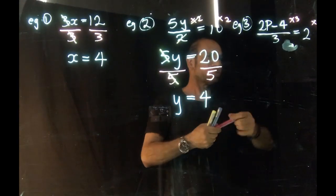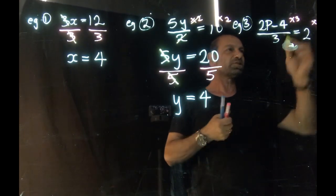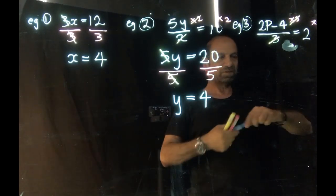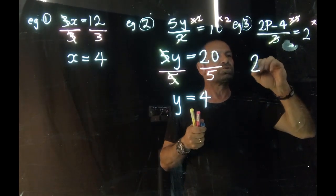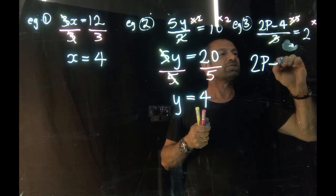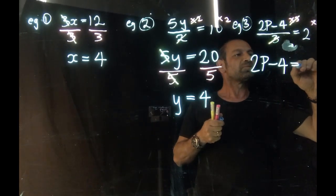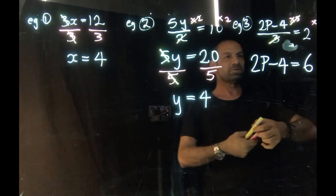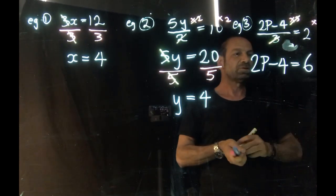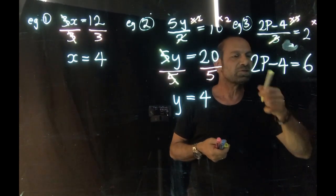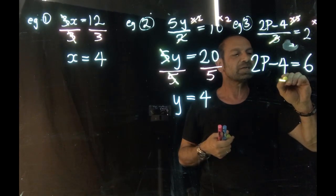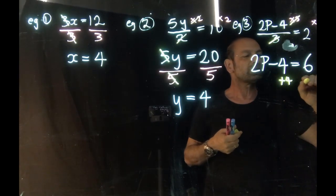Okay, we did that initially. That means we will cancel here, leaving us with 2p minus 4 equals to 6. So the next stage, we're now going to deal with minus 4. So the reverse operation of minus 4 is adding 4 to both sides, apologies.